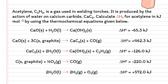Acetylene C2H2 is a gas used in welding torches. It is produced by the action of water on calcium carbide CaC2. Calculate the enthalpy of formations for acetylene in kilojoule per mole by using the thermochemical equations given below. We have 5 given equations, but we need to write the thermochemical equation for the targeted equation on our own.